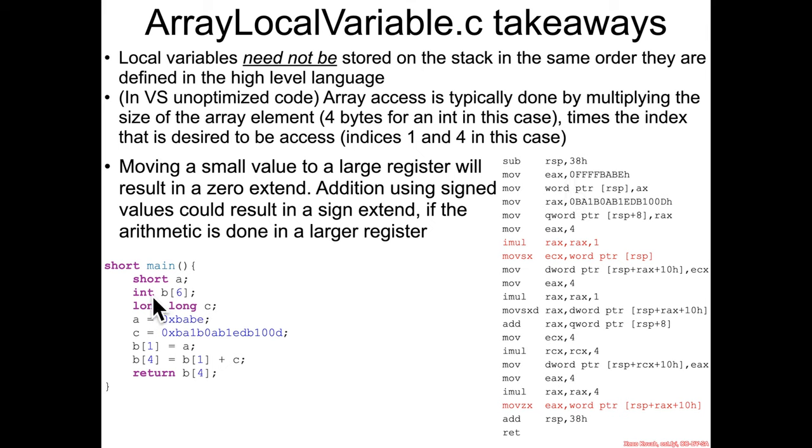It's doing that because it sees that A is a signed short value, so it puts it into AX. But then it's actually only moving AX, the bottom two bytes, so really just hex babe goes into RSP one word pointer, so only the two bytes are actually going to change there.